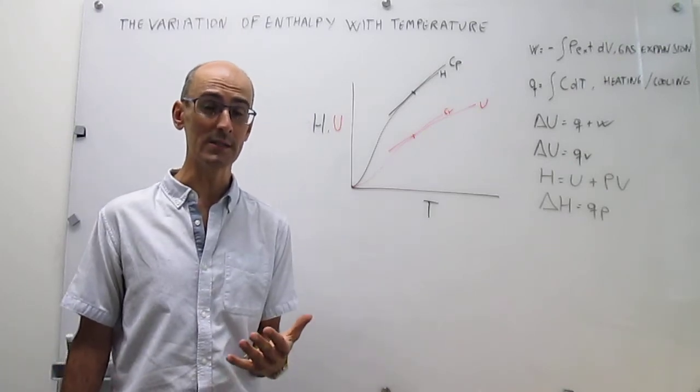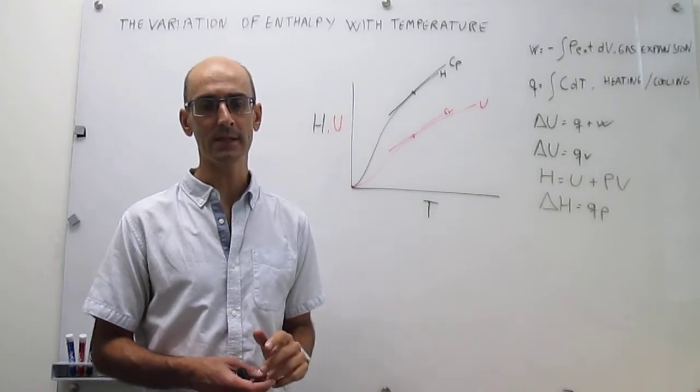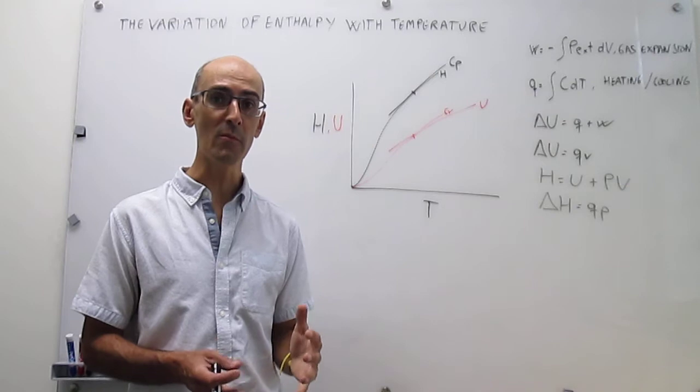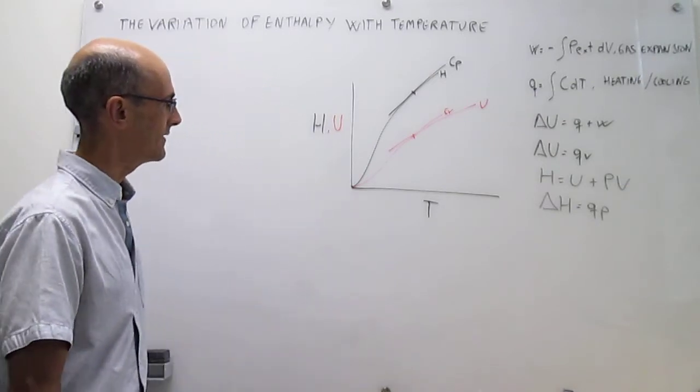So here what we're actually going to do is see how much larger is the heat capacity at constant pressure versus that constant volume for an ideal gas. So let's try to see how that works out.